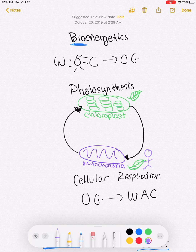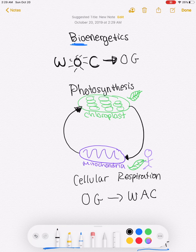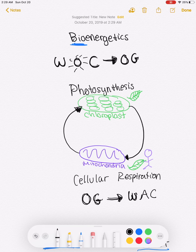We have an acronym for them. For photosynthesis, it's WOC-OG — meaning the reactants of photosynthesis are water, sun, and carbon dioxide, which produces oxygen and glucose. For cellular respiration, the reactants are oxygen and glucose, which produces water, ATP, and carbon dioxide.